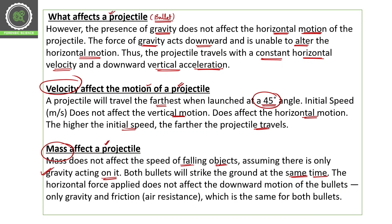The horizontal force applied does not affect the downward motion of the bullet. Only gravity and friction — you can also call it air resistance — affect the downward motion. So gravity and friction, which is the air resistance that the bullet works against, are the relevant forces here.